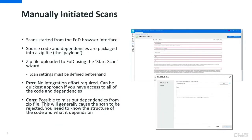With a manually initiated scan, you actually start the scan from the FOD browser interface. You have to zip together your source code and dependencies into a zip file — that's called the payload — and then you upload that payload, the zip file, to FOD using the smart scan wizard. Before you do that, you have to define the scan settings on a form, which is basically the one shown on the right-hand side.